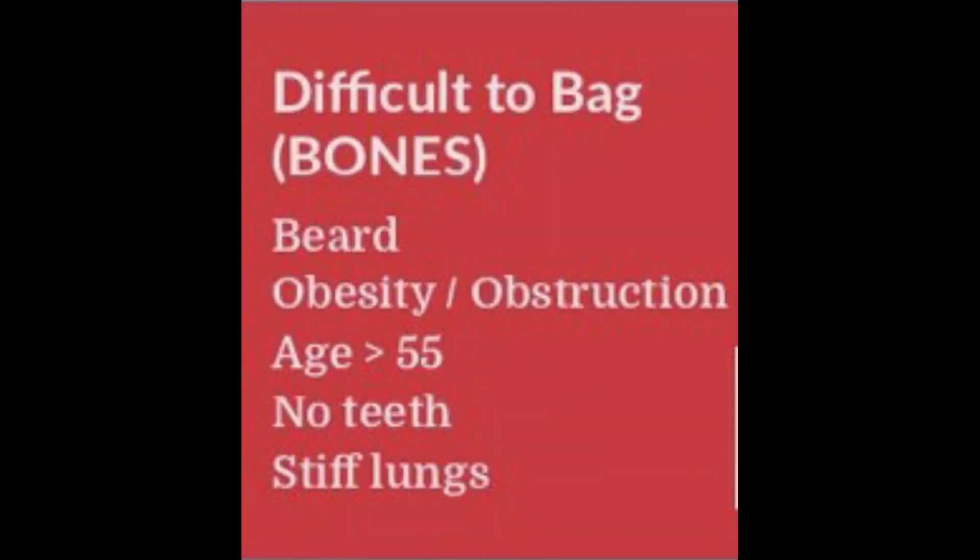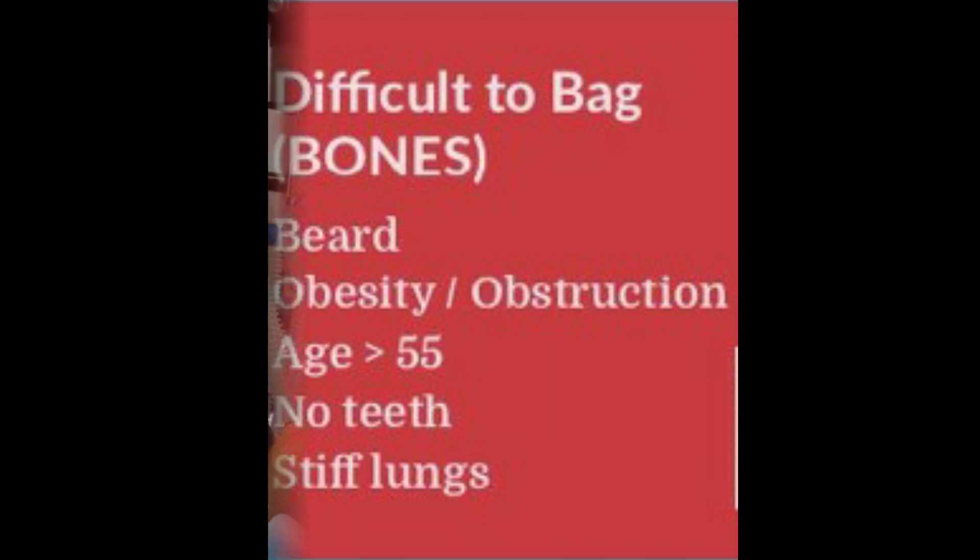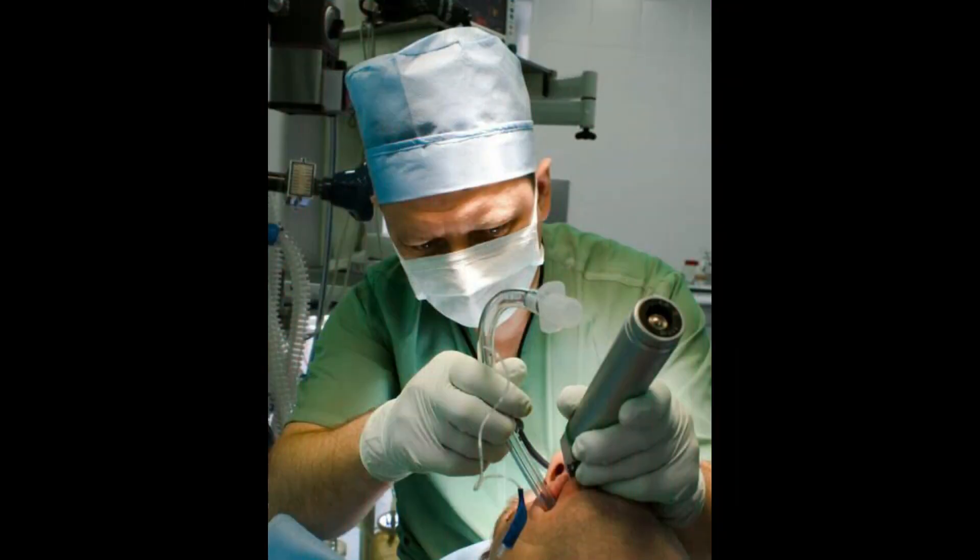Certain group indices are given to remember the points for predicting difficult bag and mask ventilation, such as the mnemonic BONES: Bones, Beard, Obesity or Obstruction, No teeth, Elderly, Stiff lungs, and Snorers.